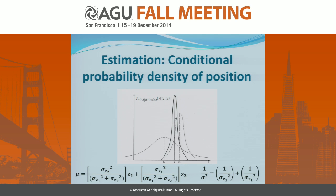Let's start talking about the Kalman filter with a simple example. Suppose we want to estimate the position of an object just based on noisy measurements. We start with the first measurement. As we all know, there is some uncertainty in measurements, so there is some deviation in our estimations. This is our first measurement, and the sigma tells us how sure we are about our measurements — if sigma is broad, it tells us that we are not very sure about that particular measurement. In the case of having just the first measurement, the best estimation we can have is Z1, with that much uncertainty.